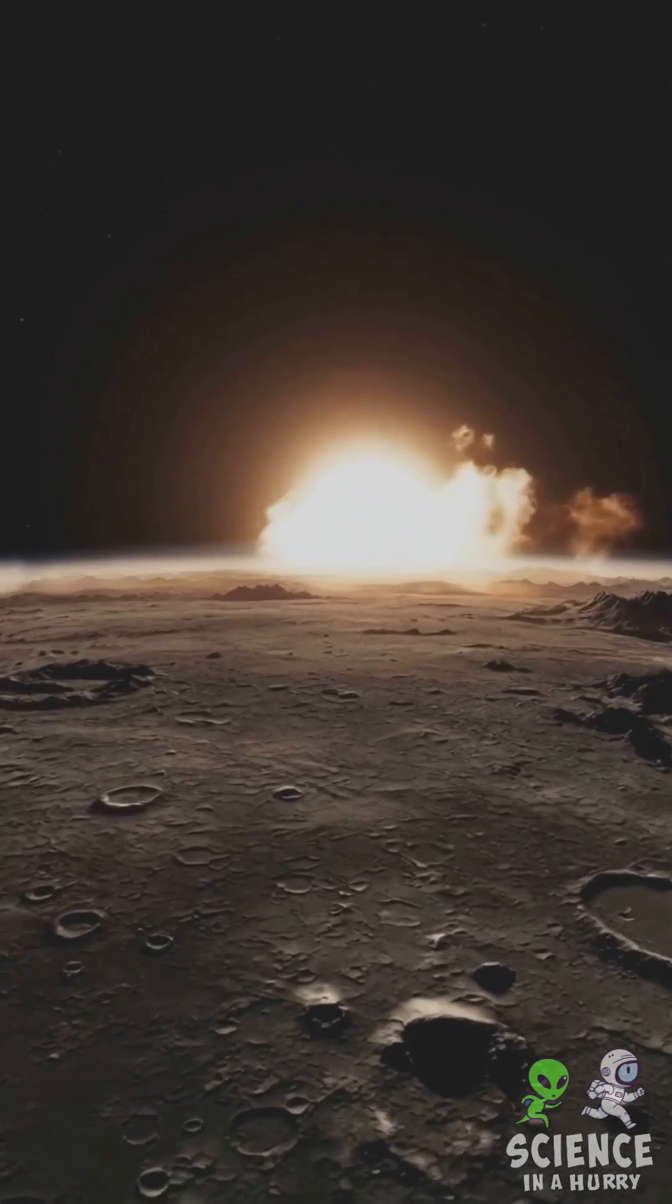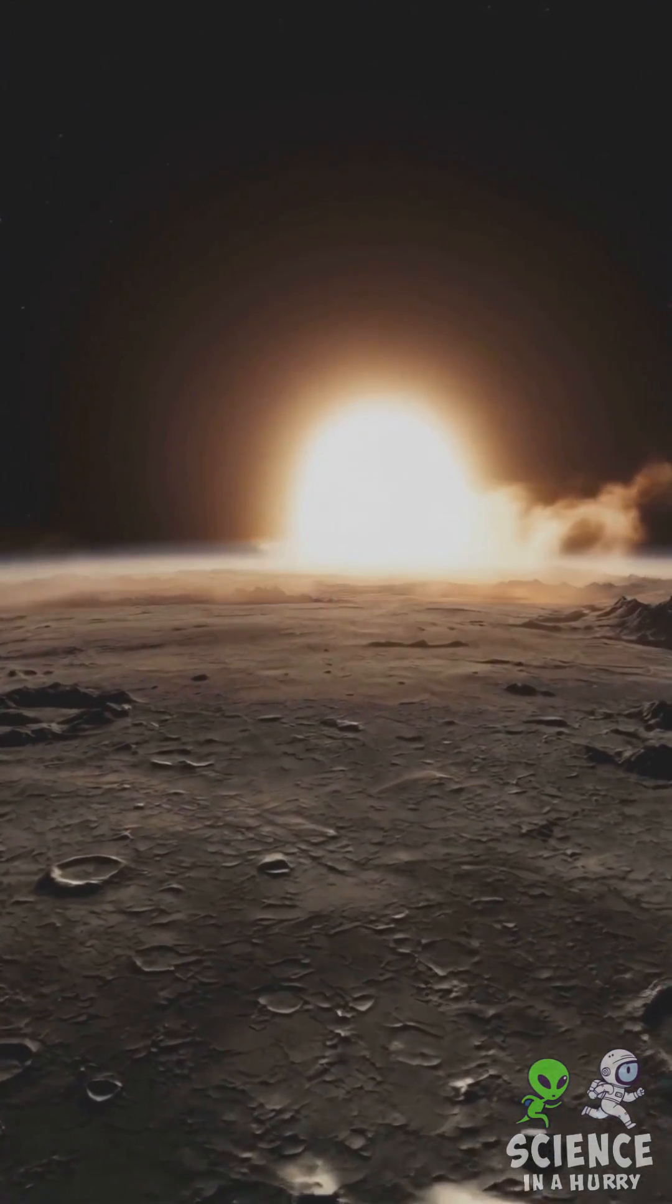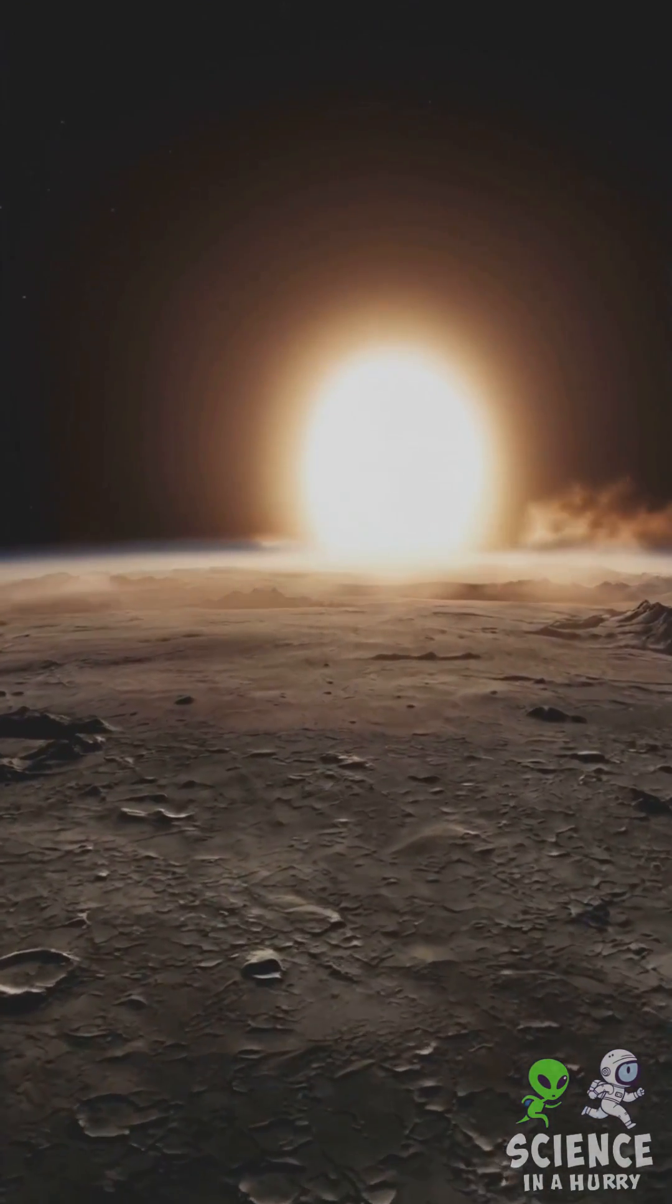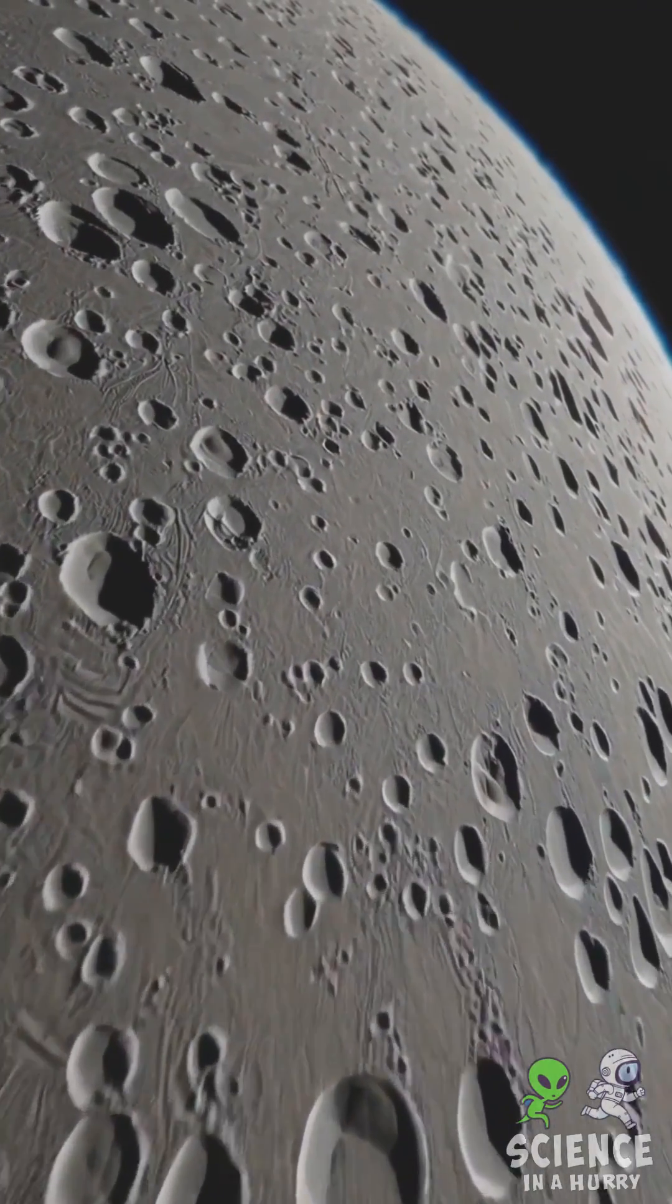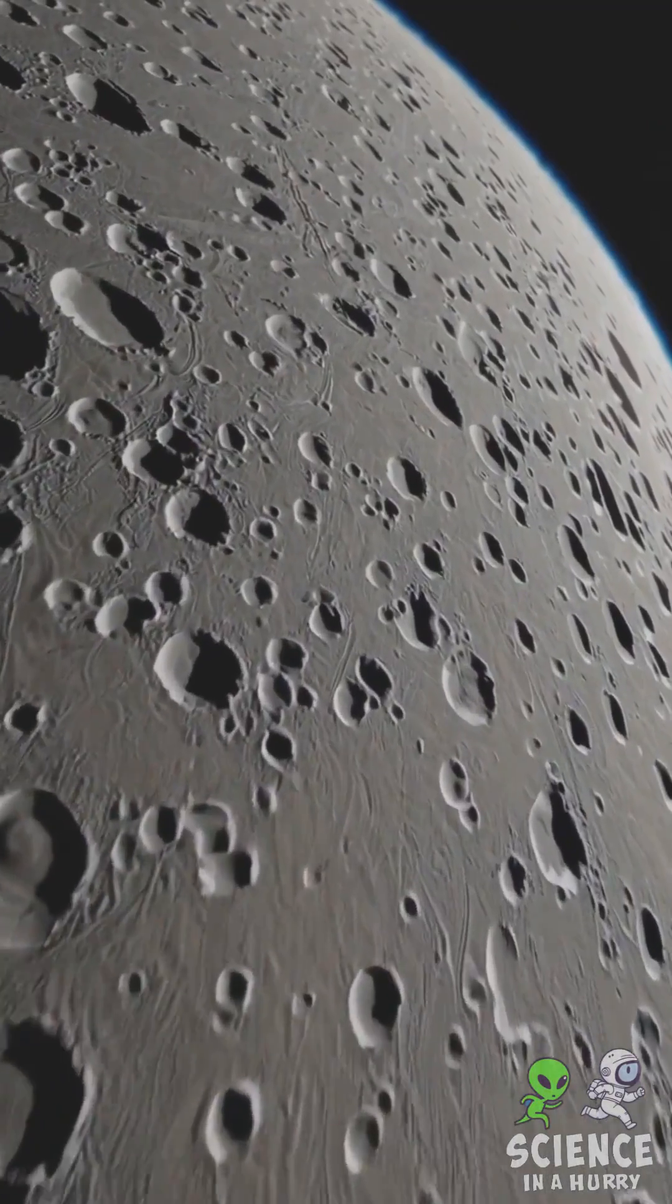While daytime temperatures soar to a staggering 430 degrees Celsius, or about 800 degrees Fahrenheit, this drastic fluctuation arises because Mercury has virtually no atmosphere to trap heat.